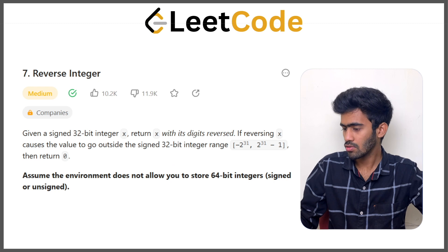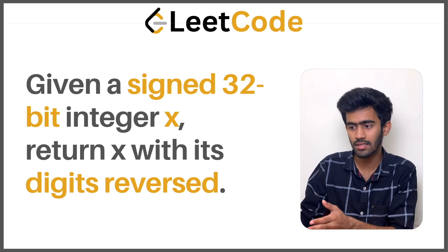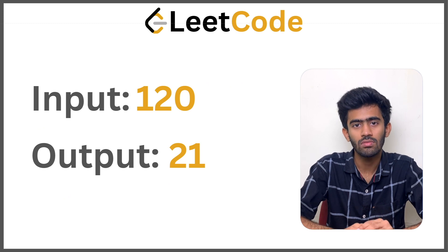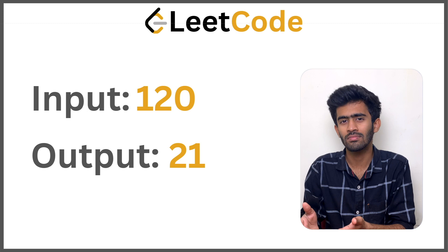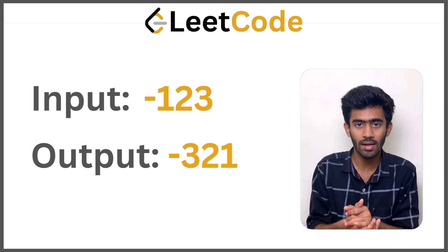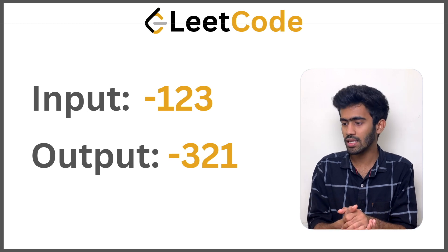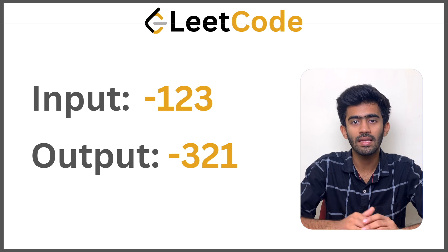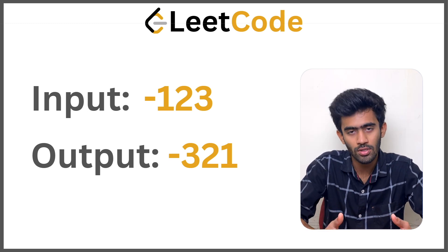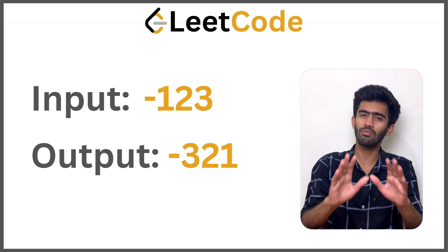Moving on to the examples. Given a signed 32-bit number x, we have to return the reverse of it. For example, if we take 120 as input, the output should be the reverse, which is 021, but since 0 has no value, the output is simply 21. Similarly, if we take minus 123 as input — since it can include signed numbers, both positive and negative — the output we get is minus 321. So if the initial input is negative, then the reverse number will also be negative.